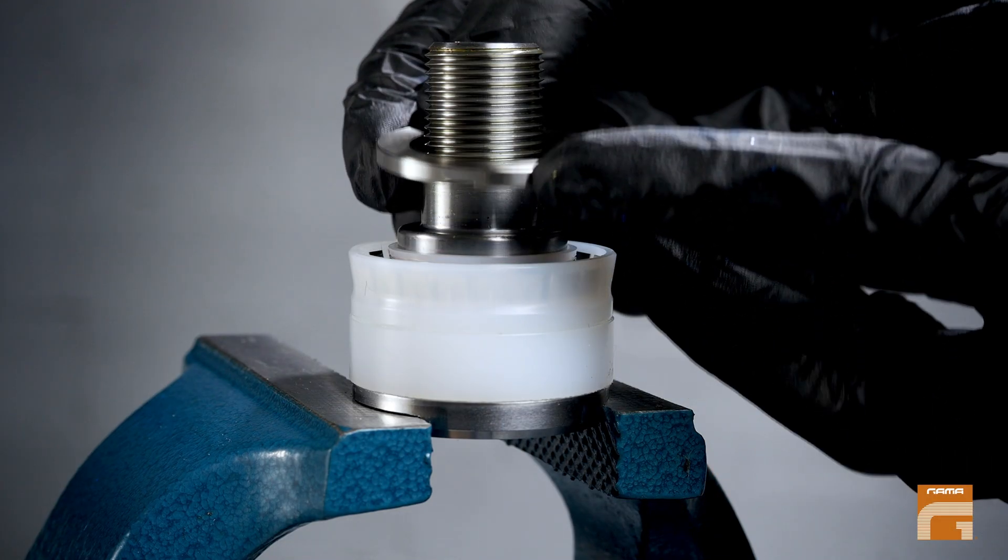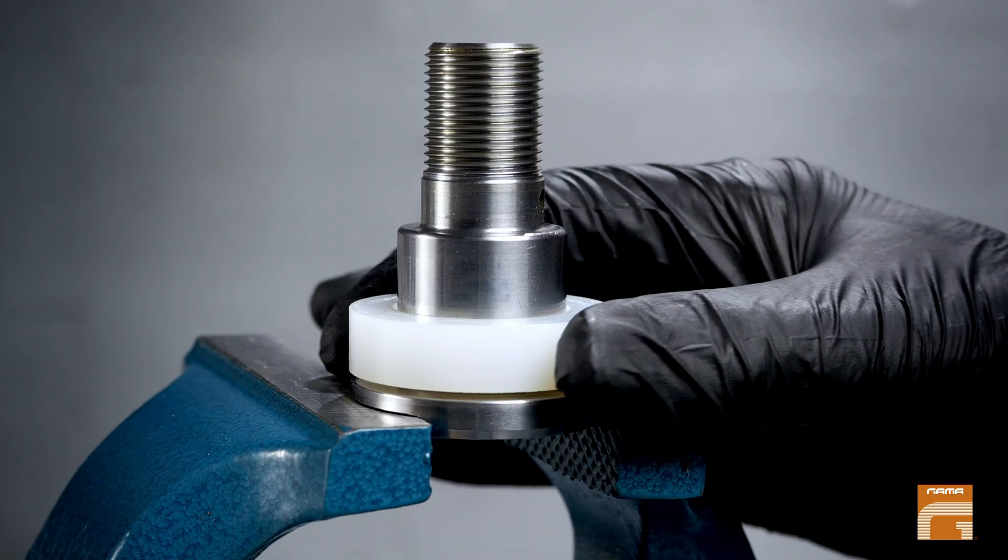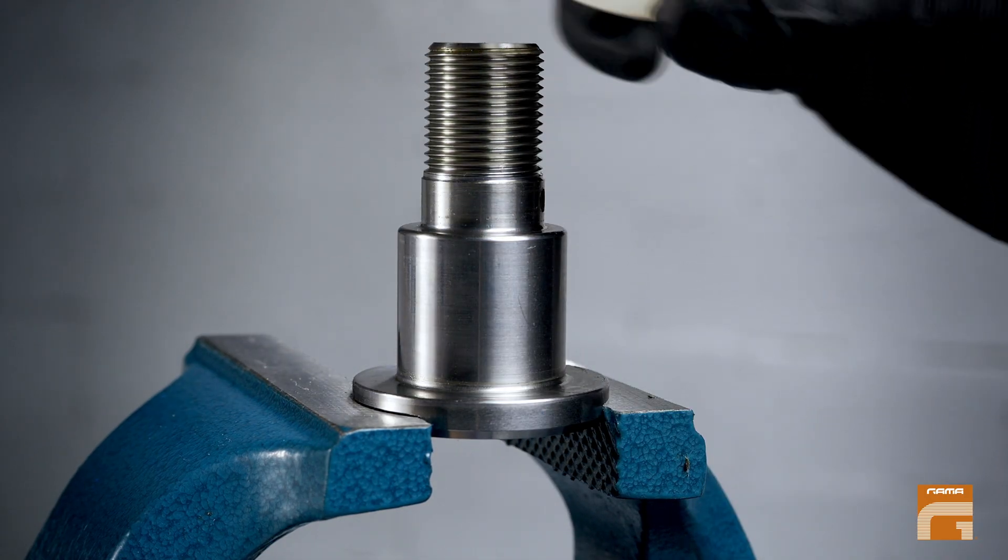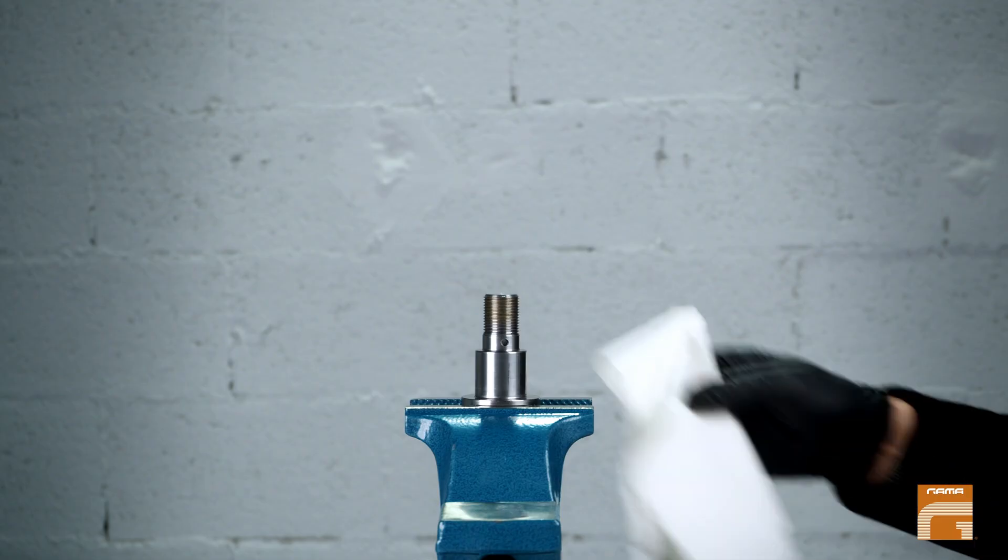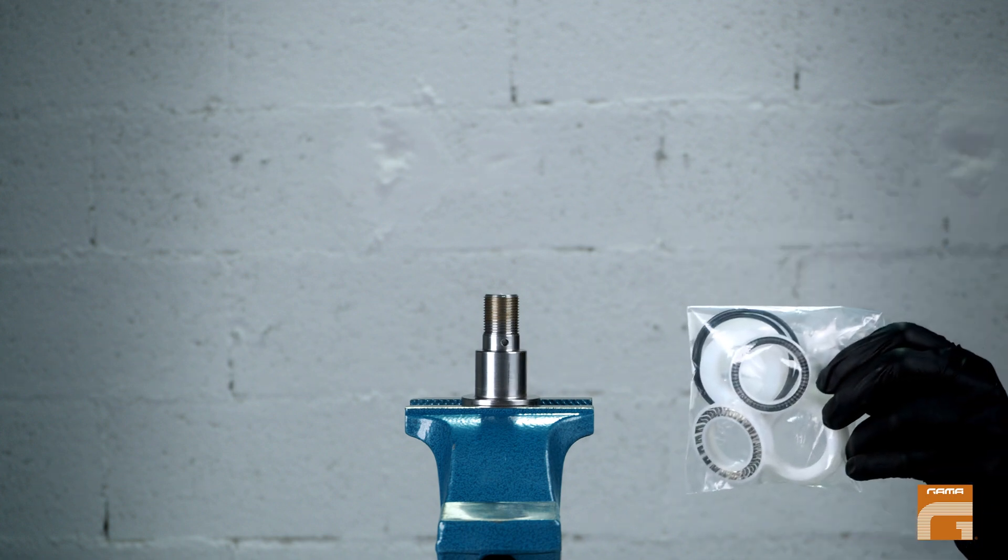The piston should remain fixed firmly in the vise. Once you have removed the old seals of the piston, wipe it well with the tissue and prepare a kit with new plastic seals of corresponding size and type.